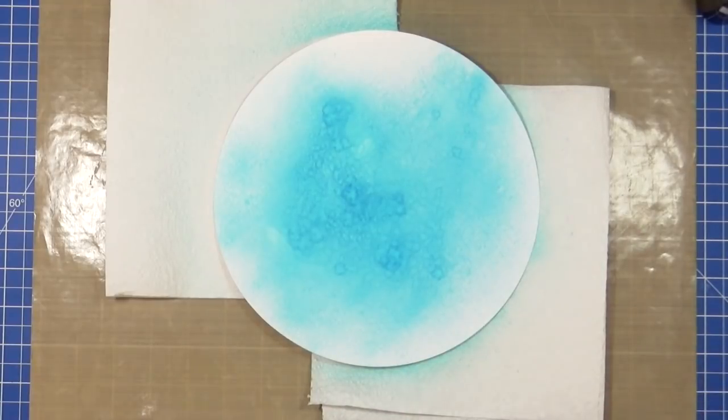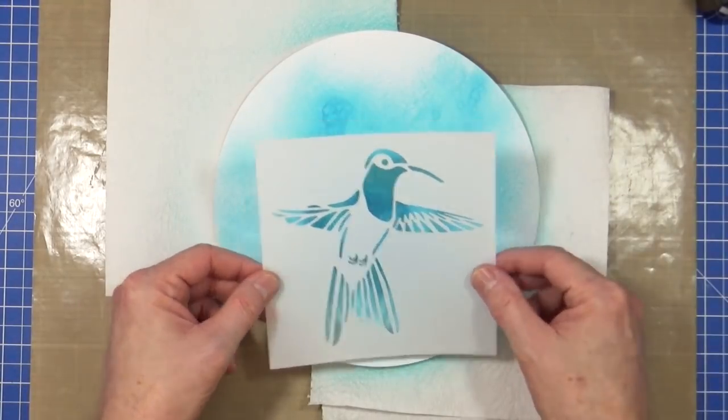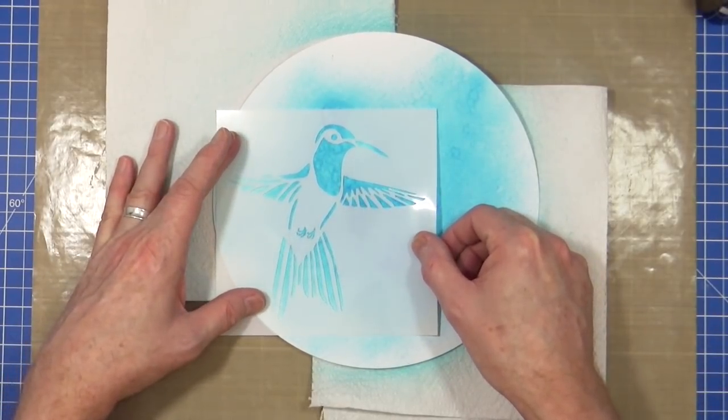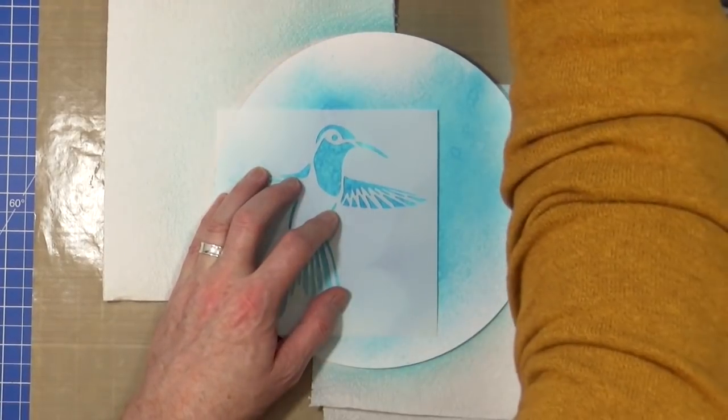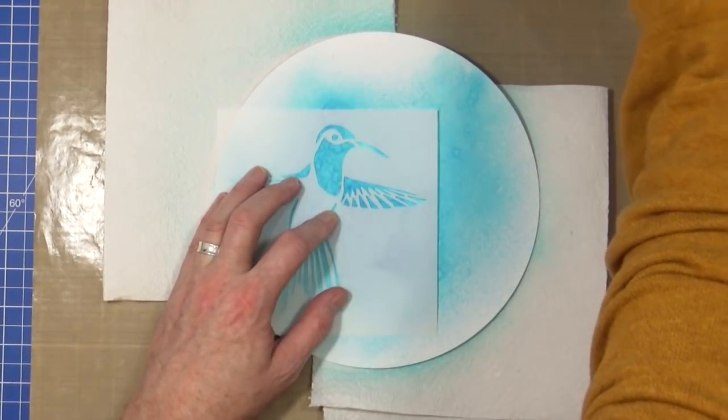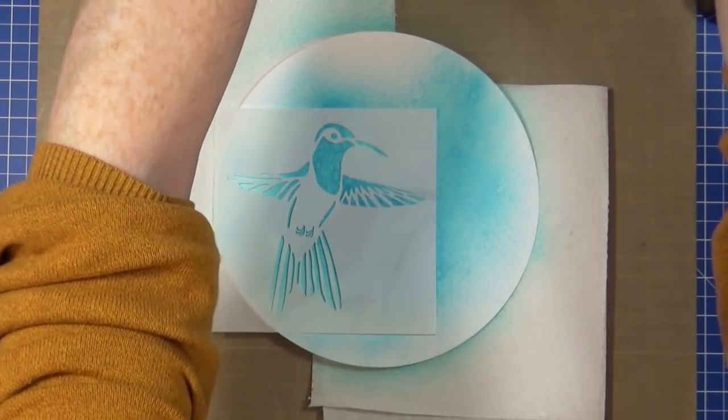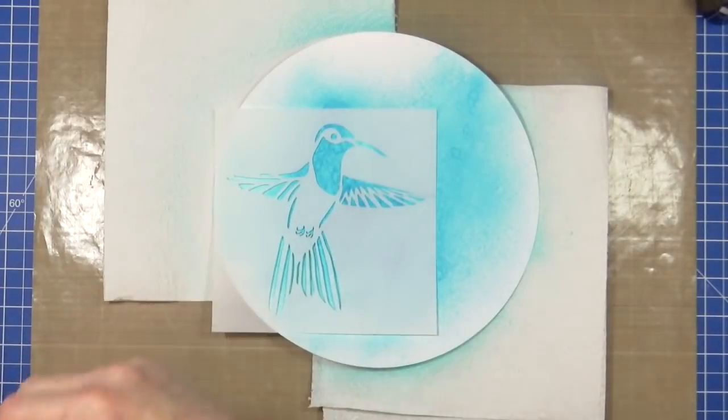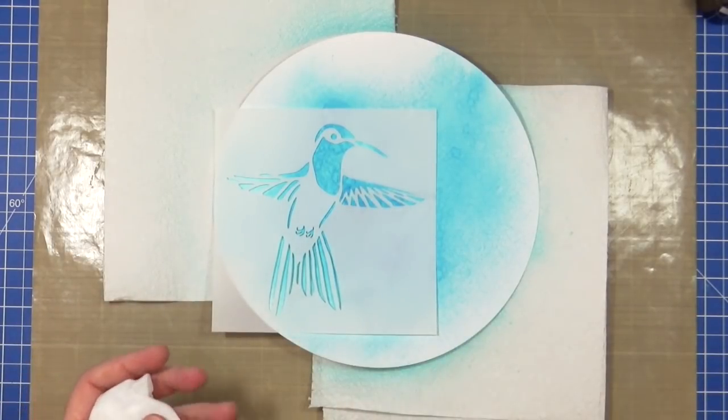So, what I want to do next, is I want to bring in this stencil. So this is a hummingbird stencil from Indigo Blue, my friends at Indigo Blue. And I don't know whether or not this stencil is still available, or whether they actually ever did release it. I know the last time I looked on the website that it wasn't there. So whether I missed it when they released it, or whether they just never got around to doing it, which sometimes happens.